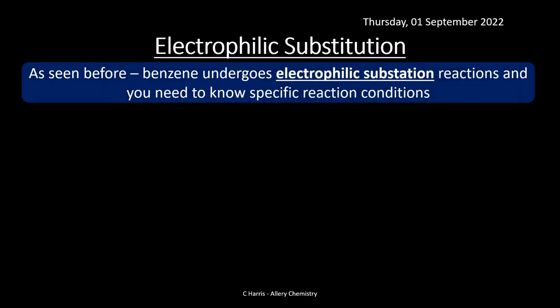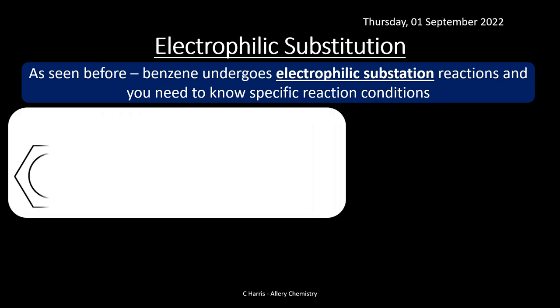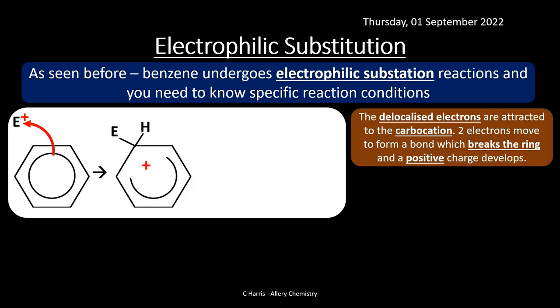Benzene undergoes electrophilic substitution reactions, and you need to know specific reaction conditions. Here we've got a benzene ring and E+, your electrophile — remember, electrophiles have a positive or delta positive charge. The electrons in the delocalized system are attracted to the carbocation. Normally, to react with benzene, you need something quite powerful. Delta positives are generally not enough to break into this delocalized electron ring. So the electrophiles you'll see later on actually have a proper full positive charge — really deficient in electrons.